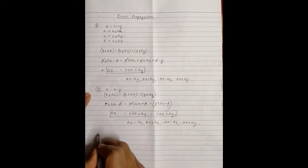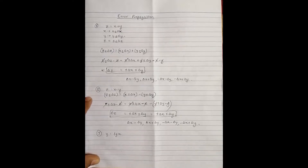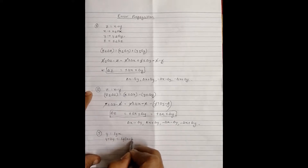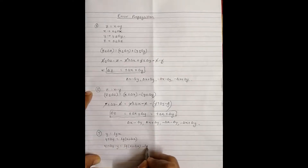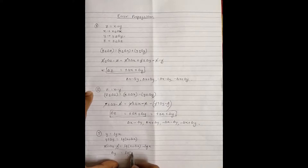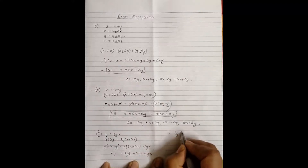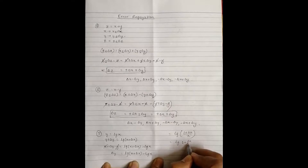Number 3: if I have a quantity y equals lg x — that is, log x or 10 to the power x — and if I have a small error in x, then y plus delta y will be equal to lg(x plus delta x). So y plus delta y minus y equals lg(x plus delta x) minus lg(x). The y's cancel, giving delta y equals lg(x plus delta x) minus lg(x), which can also be written as lg(1 plus delta x over x).